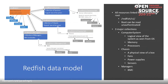You can see the service root with sessions, accounts, and schemas. There would also be certificate service and update service. From the service root, you can see links to the three major collections in Redfish: computer system — which is the logical view of the system as seen from the OS, so memory and processors — and chassis.